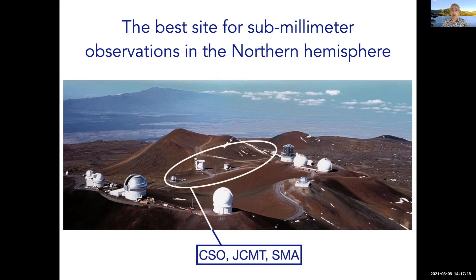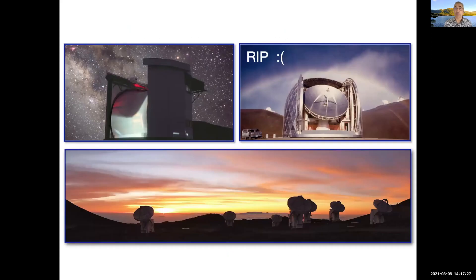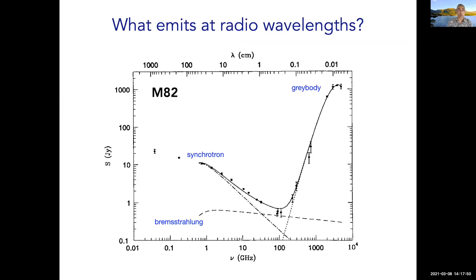This area is known as Submillimeter Valley, because it was a pioneering place to carry out submillimeter observations. This is the Caltech Submillimeter Observatory, the James Clerk Maxwell Telescope, and the submillimeter array is an array of eight times six-meter dishes. This is the best site for submillimeter observations in the Northern Hemisphere. And of course in the South, we have our family, ALMA.